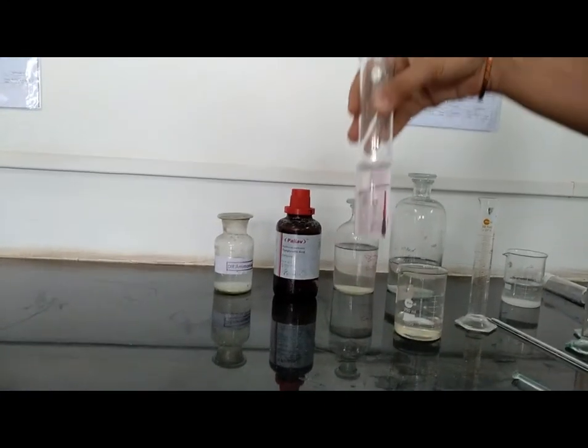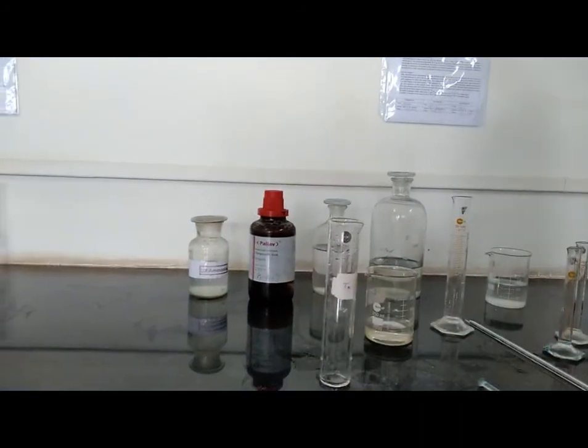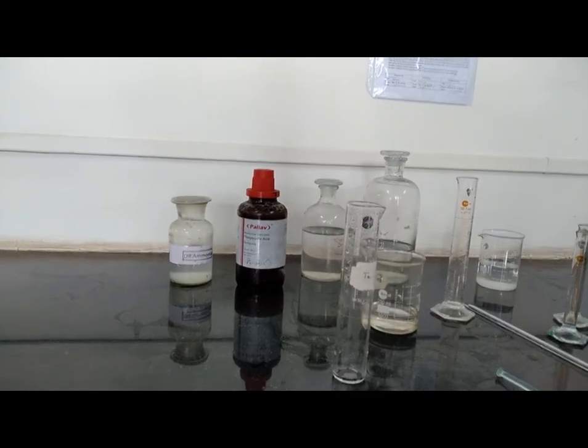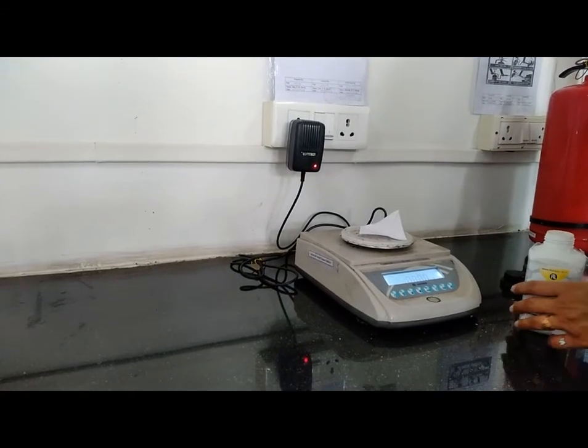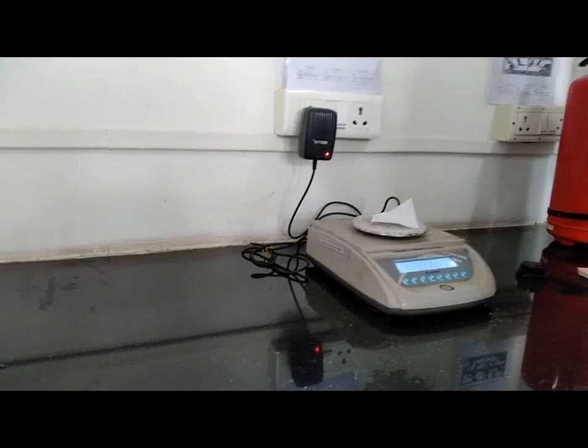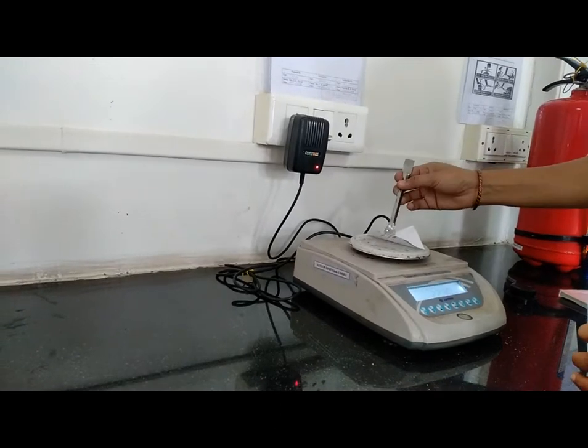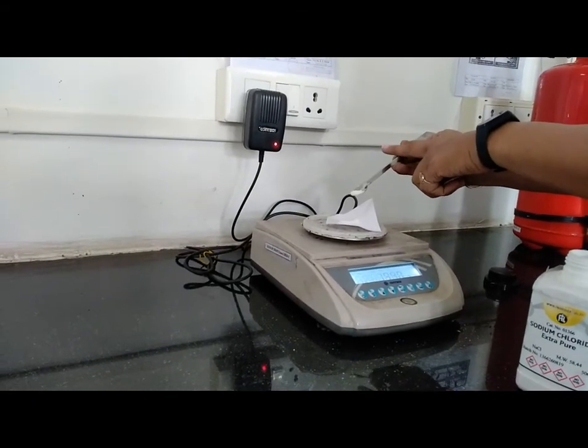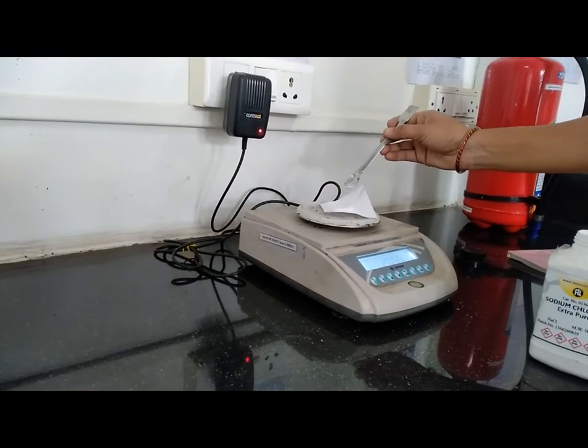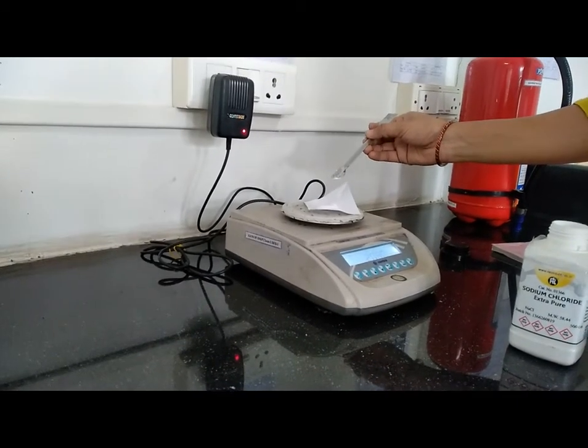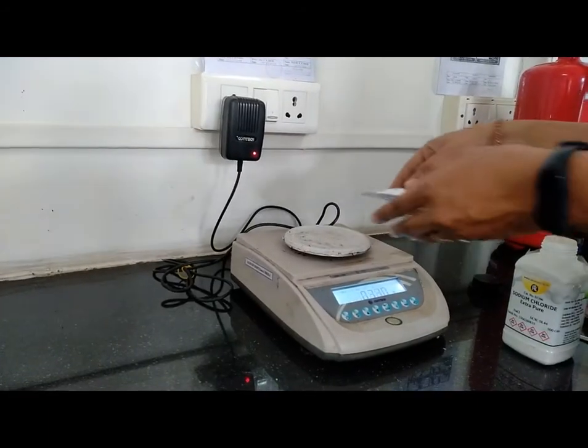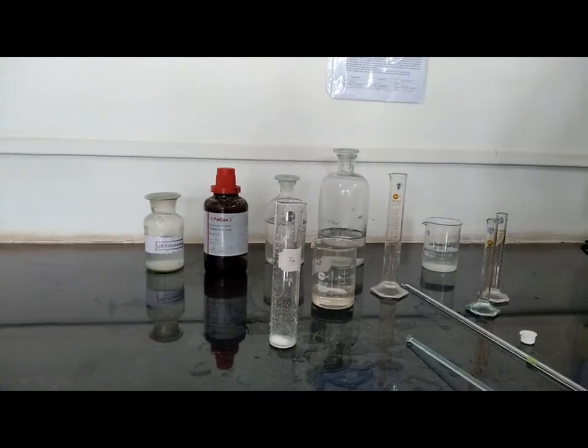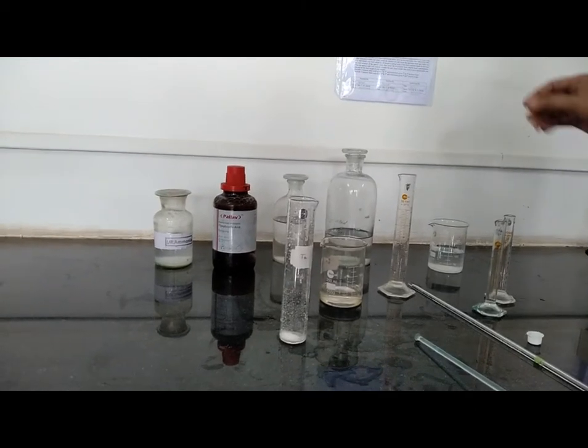And now prepare the solution for test, for the limit test. For the limit test for iron we require test sample sodium chloride. So weigh approximately 2 grams of sodium chloride. Then add 1 ml of water. Add to Nessler cylinder.